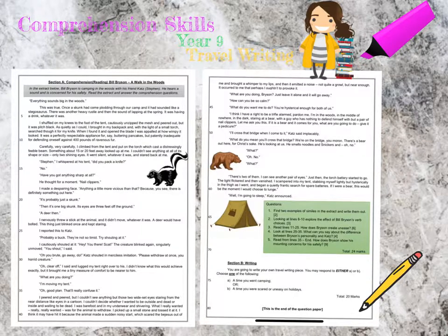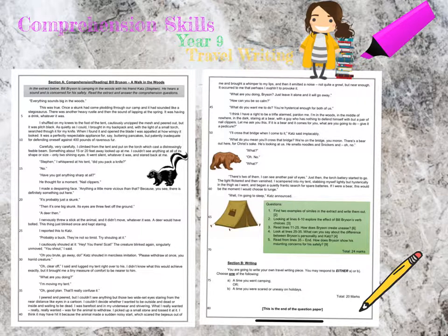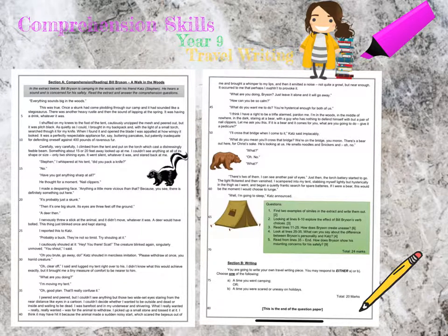Section A is the reading or comprehension section, which in a way is employing all of the techniques that you need to employ in order to be successful for Task B, your writing section. I have chosen a Bill Bryson sample — kind of like some of the stuff we have done in class. This one is from 'A Walk in the Woods.'